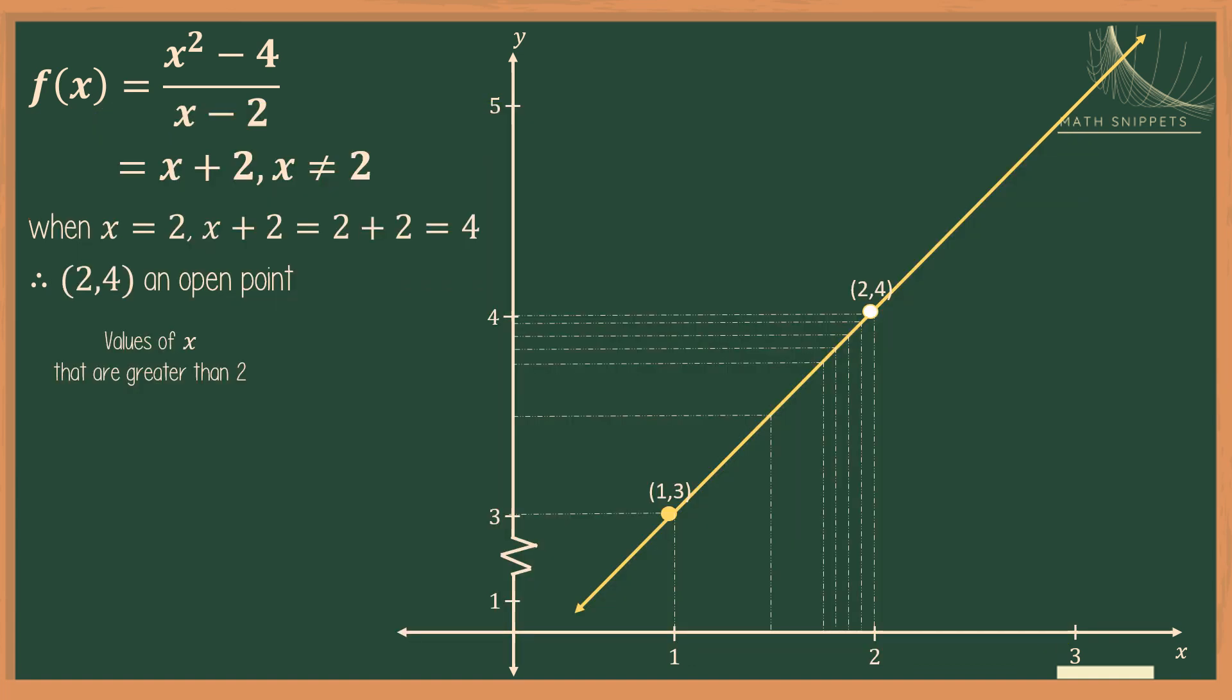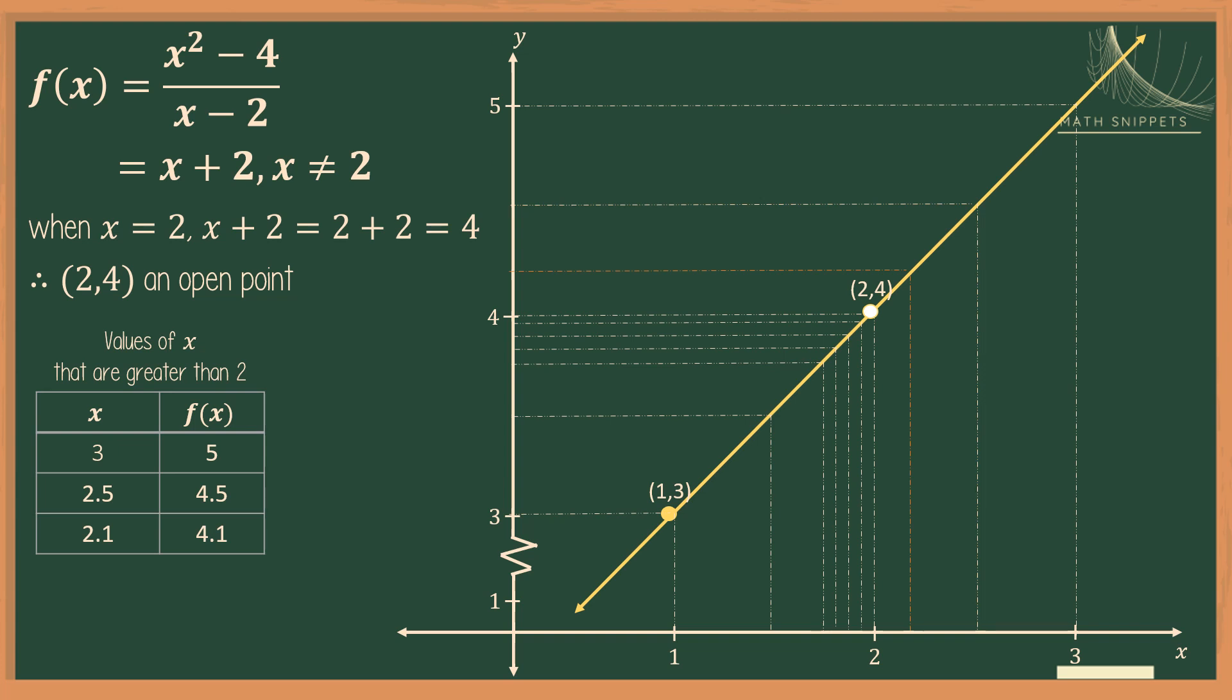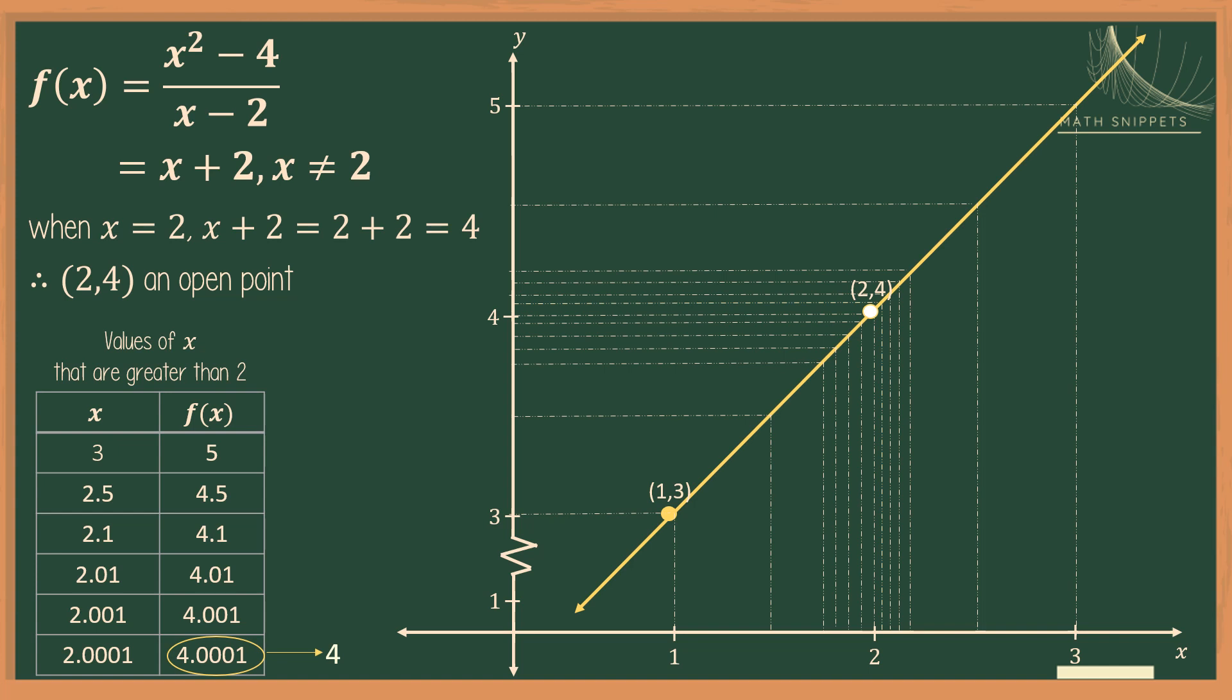Now, let's take the right-hand side, or let's take values that are greater than 2. So, let's start with x equals 3. This gives us y equals 5. When x is 2.5, we have y equals 4.5. So, when we move our x's towards 2 from the right of 2, what have you observed? The points on the graph are also getting closer to 0.24. So, it follows that the values of our y are also moving towards 4.